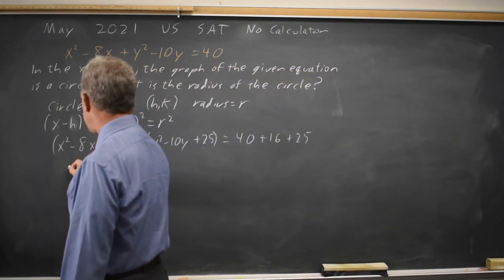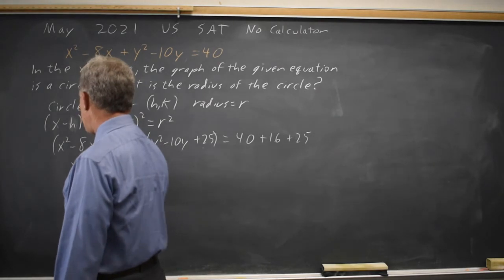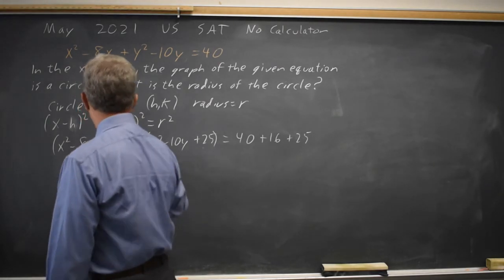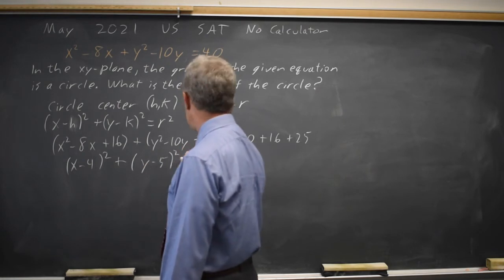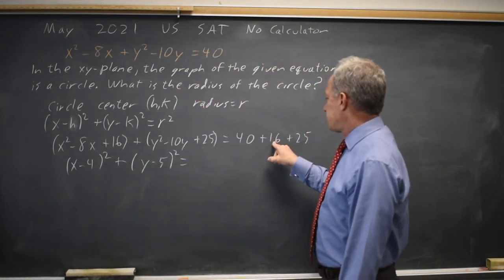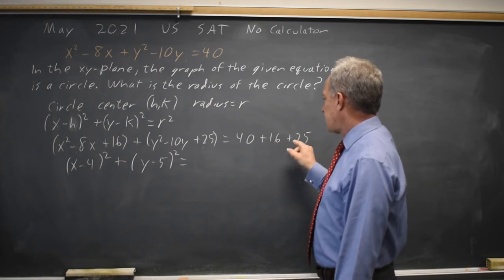This first quadratic factors as (x - 4)² and the second as (y - 5)². 40 plus 16 is 56, plus 25 is 81.